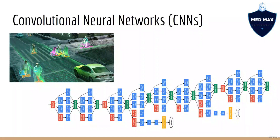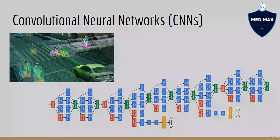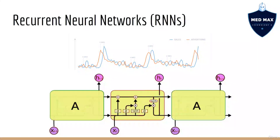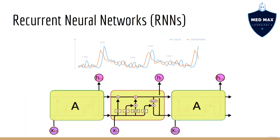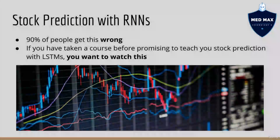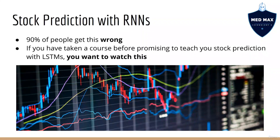Next we're going to look at convolutional neural networks, which are specialized neural networks for computer vision. Then we'll look at recurrent neural networks, which are specialized for sequence data such as time series, text, speech, and DNA. We'll even apply RNNs to stock prediction — this is one of my favorite exercises because it teaches you what 90% of other people are doing wrong.